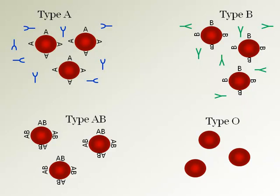Blood type AB has both the A marker and the B marker on the surface of the red blood cells, and therefore does not have any antibodies in their plasma. This makes blood type AB the universal recipient because it does not have any antibodies to attack any incoming blood. Blood type O does not have any surface markers on their red blood cells, so it has both anti-A and anti-B antibodies in the plasma to attack any blood that has either an A, B, or both markers on the surface.